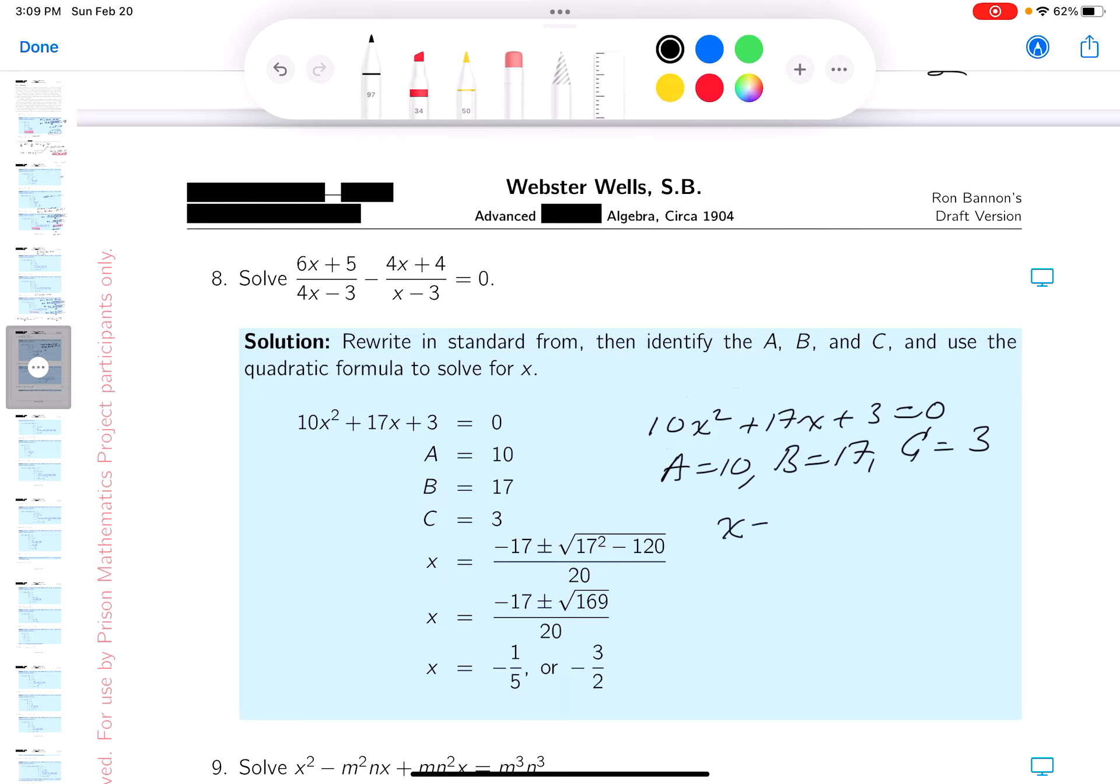What's x going to be equal to? Let's take a look at it. It's going to be the opposite of the B, which is minus 17. Oh, I've got to do the bottom first. That's 20. I like to do that first, by the way. Minus 17, plus or minus, let's see, 17 squared, minus 4 times A times C. Well, 4 times 10 is 40, and 4 times 3 is 120.